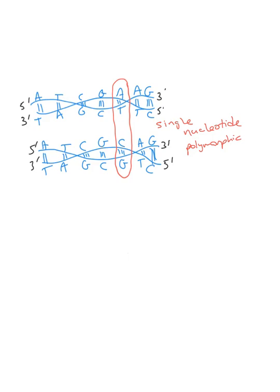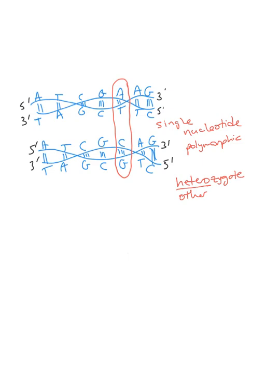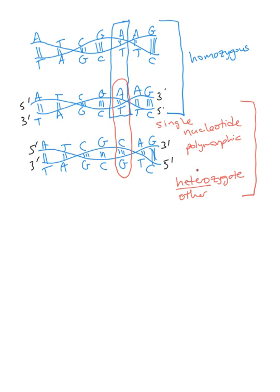This individual — if these are two chromosomes from a single person — would be considered a heterozygote, meaning the two copies of their homologous chromosome aren't exactly identical. If the two chromosomes were identical to each other, that individual would be homozygous, or a homozygote, and would not have a single nucleotide polymorphism at that location.